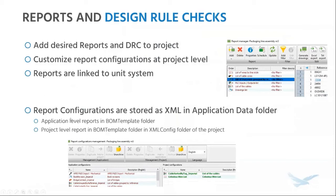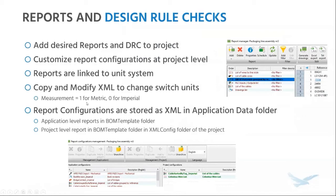If you're curious about where these report configurations are stored, they are stored as XML files in the application data folder. Depending on whether they are project-level customizations or not, they're stored in different locations. If you do need to change the unit system of a report, all you need to do is modify the XML file and change the measurement value to one for metric and zero for imperial.